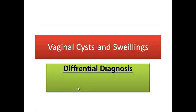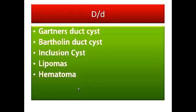Today I will be discussing different causes of vaginal cysts and swellings. In order of frequency, these are Gartner's duct cyst, Bartholin duct cyst, inclusion cysts, lipomas, and hematomas. They are all common cysts seen in the vagina and vulva.